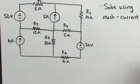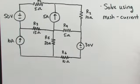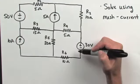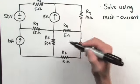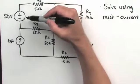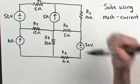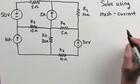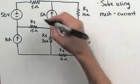The first step when using the mesh current method is to identify the meshes and indicate an assumed direction of current flow. The meshes are the smallest loops in a circuit. We'll start with meshes that contain the voltage supplies, because voltage supplies give us a good indication of the direction of current flow.